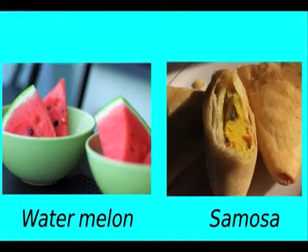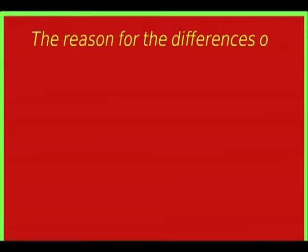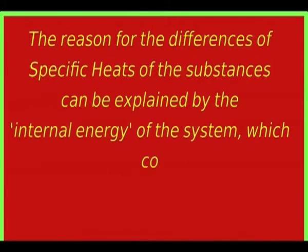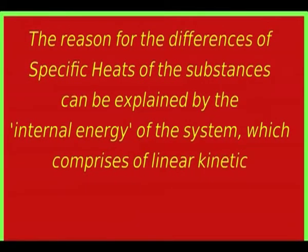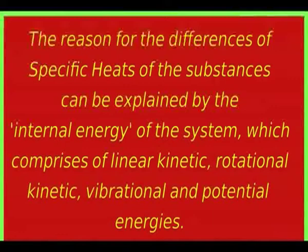So now we can say the watermelon keeps its coolness for more time, and the inside of the samosa keeps its hotness for more time, only due to their specific heats. The reason for the differences in specific heats of substances can be explained by the internal energy of the system.